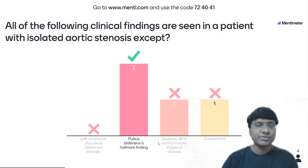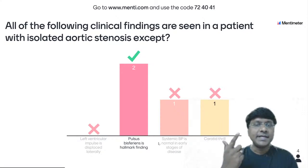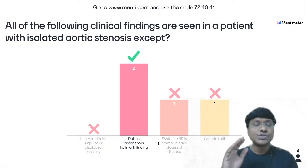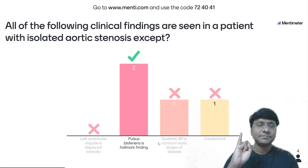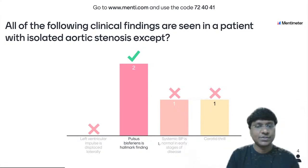Pulses bisferiens is seen in patients with hypertrophic obstructive cardiomyopathy, aortic regurgitation, and aortic regurgitation with severe aortic stenosis — those are the three conditions: HOCM, aortic regurgitation, and AR with severe AS.